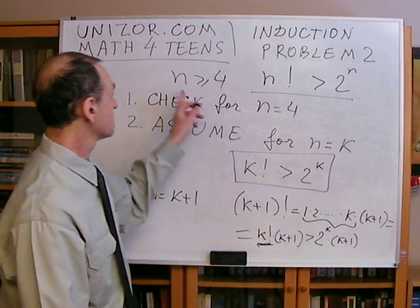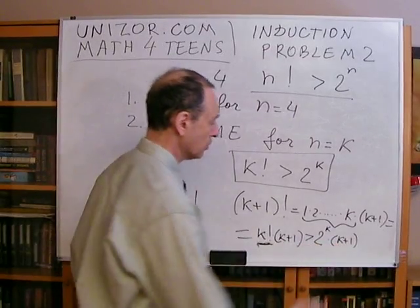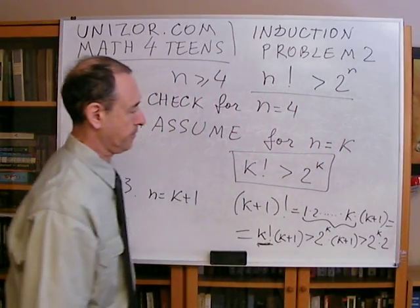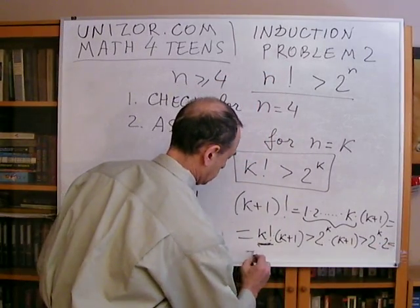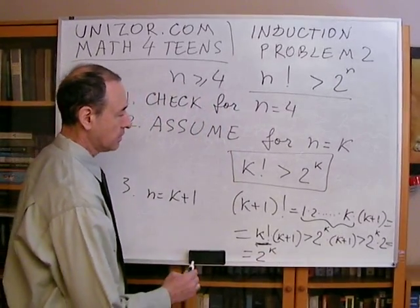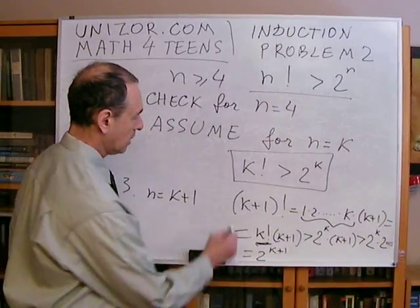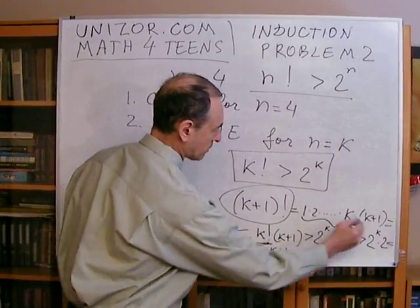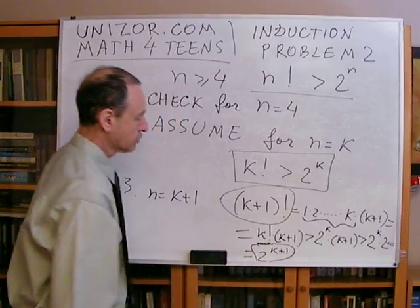Now, k is at least four, so k plus one is definitely greater than two. Therefore, two to the k times k plus one is greater than two to the k times two, which equals two to the power of k plus one. So we have proved that k plus one factorial is greater than two to the k plus one.